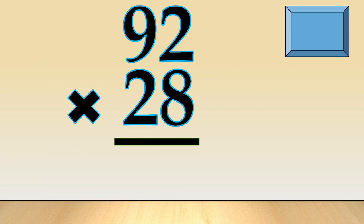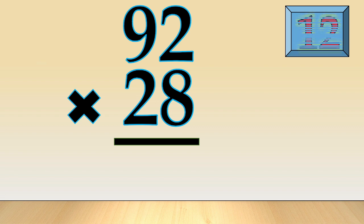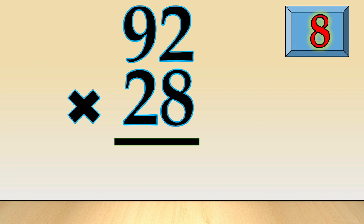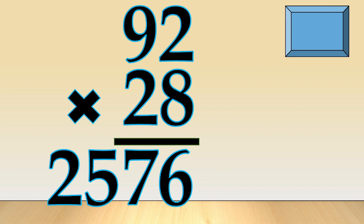92 times 28. Times up. 92 times 28 is equal to 2,576.